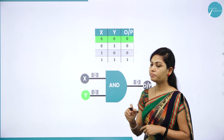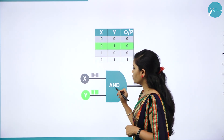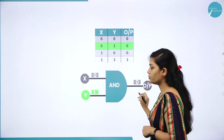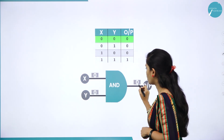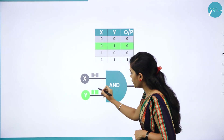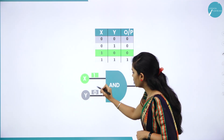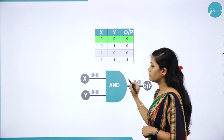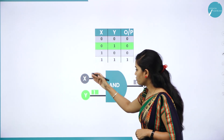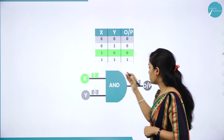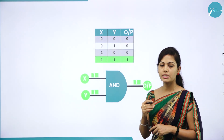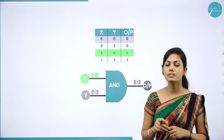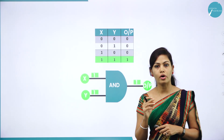The logic diagram of AND gate: this is the input and this is the output. If X = 0, Y = 0, output is 0; 0 · 1 = 0; 1 · 0 = 0; 1 · 1 = 1. AND gate has two or more input signals but only one output signal.